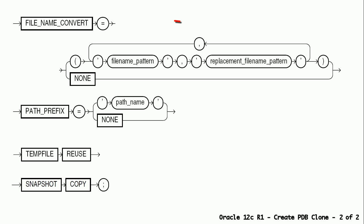The PDB FILE NAME CONVERT clause can be used to instruct on how the file names are generated for the PDB. The PATH PREFIX clause can be used to ensure that file paths for directory objects and parameters associated with the PDB are restricted to the specified directory or its subdirectories.